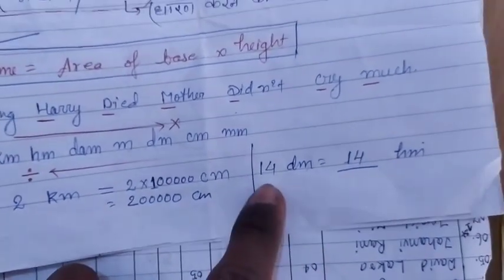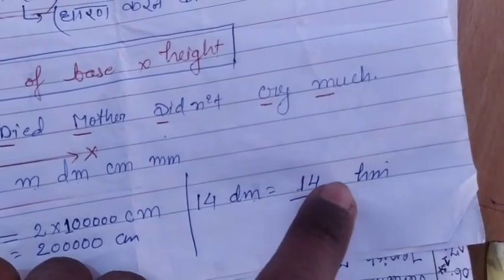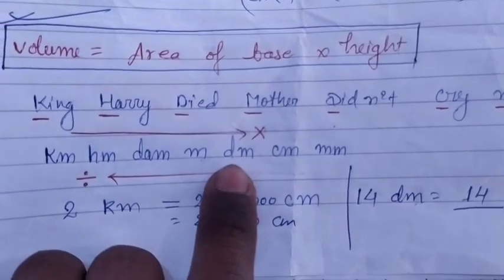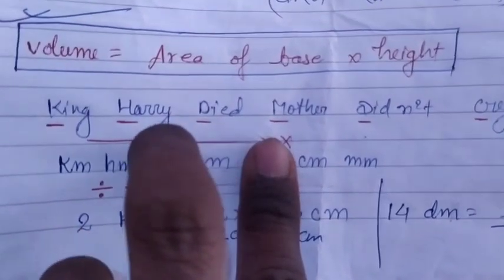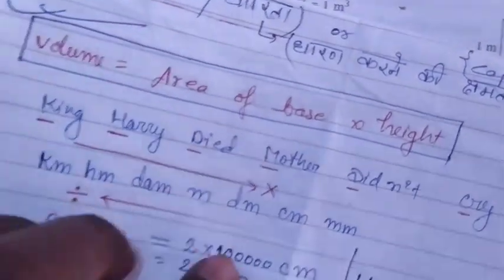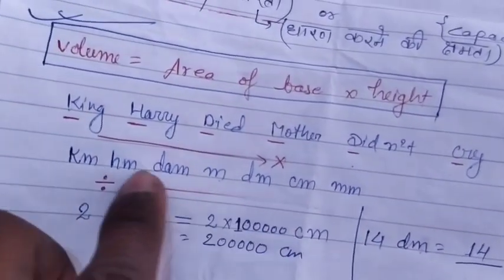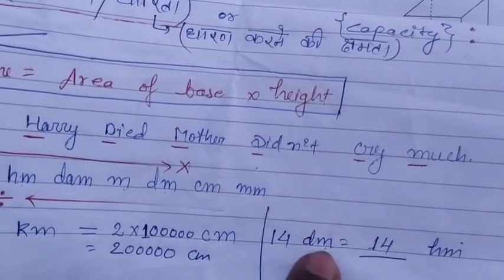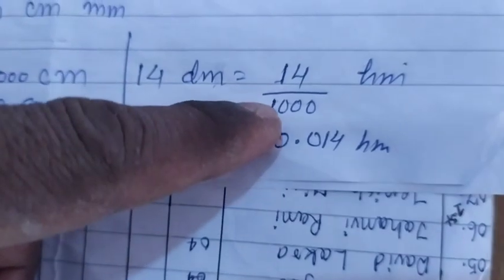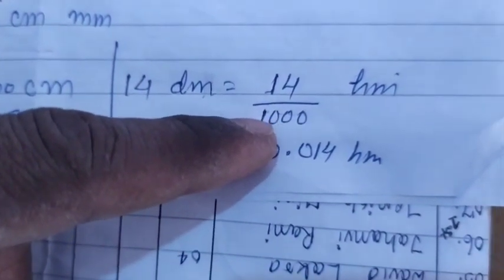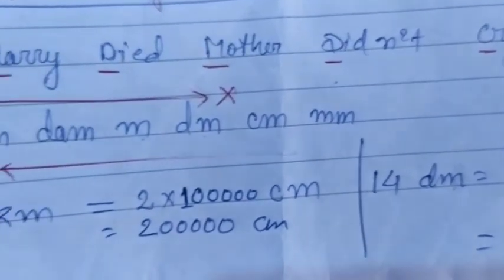Next, convert 14 decimeters into hectometers. From decimeter to hectometer we move right to left — that is three steps. Moving right to left means we divide. So 14 ÷ 1000 (three zeros) = 0.014 hectometers.